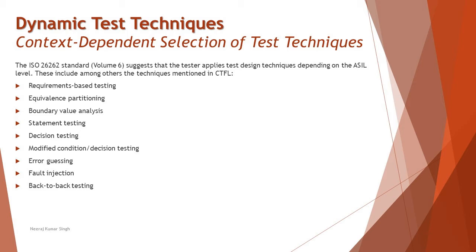Here is the list of techniques a tester can decide on based on the ASIL level: requirement-based technique, equivalence partition, boundary value analysis, statement testing, decision testing, modified condition decision testing, error guessing, fault injection, and back-to-back testing. Most of these have already been covered in the foundation course. A few new ones — requirement-based testing, fault injection, and back-to-back testing — were discussed in chapter 4. Please visit the previous chapter 4 tutorials or the CTFL tutorials for more details on equivalence partition and related techniques.